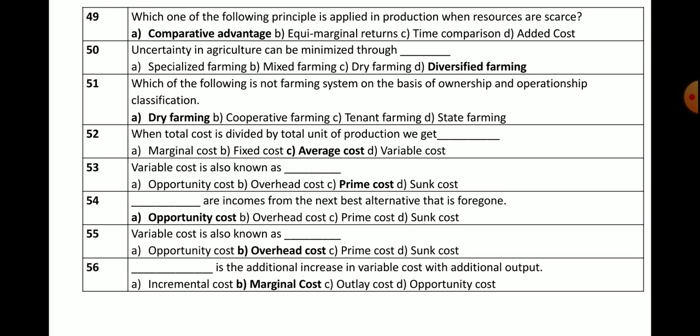Question number 53 (most important): Variable cost is also known as — options: opportunity cost, overhead cost, prime cost, or sunk cost. The correct answer is prime cost. Keep in mind: variable cost is also known as prime cost.